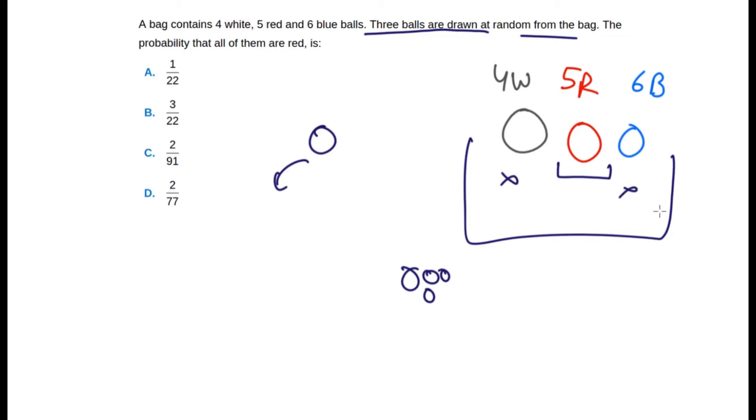We have to select three balls, so we just select 5C3 because there are five red balls. Out of five, we have to select three from the red only, not the white and blue. So this is our favorable case which will result in this selection.